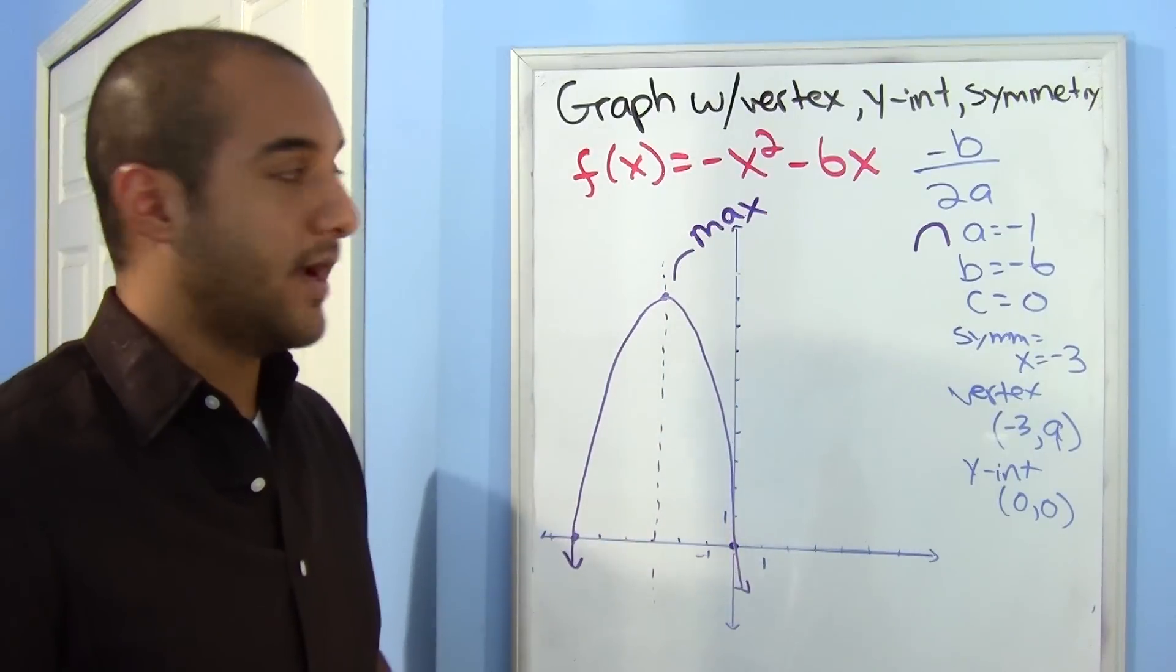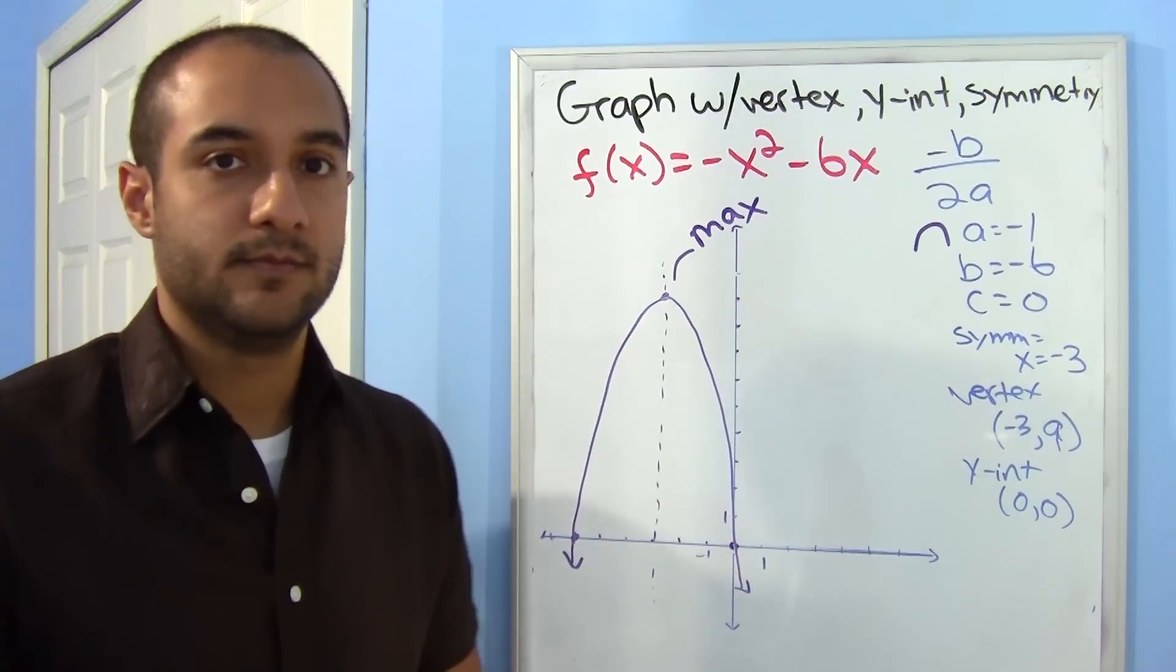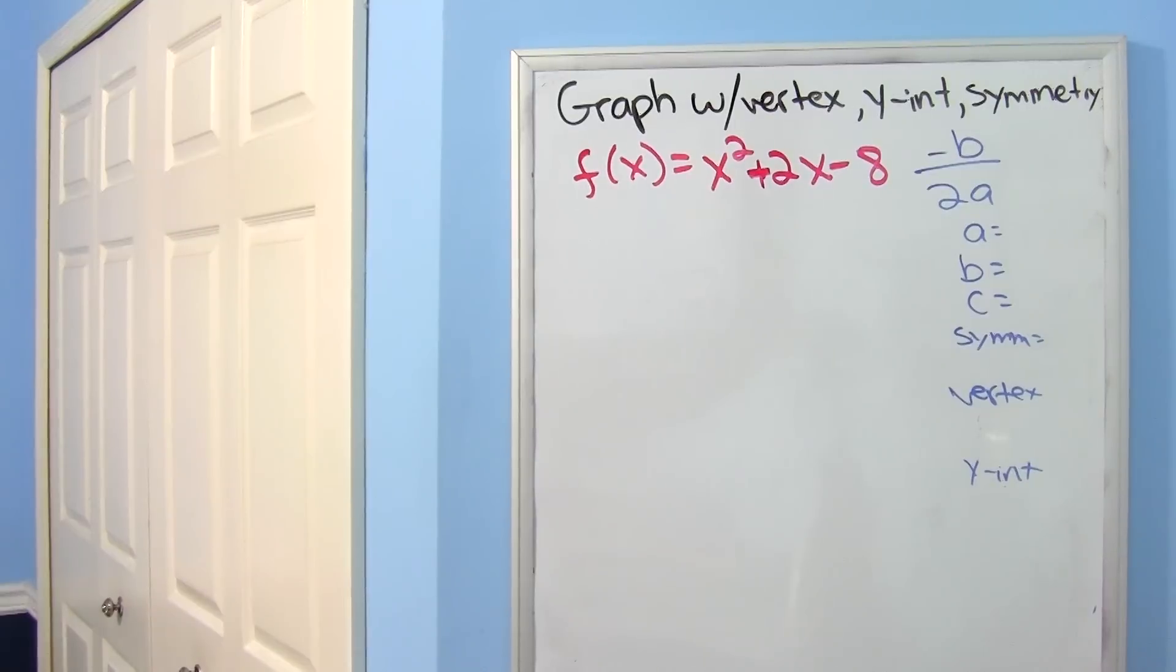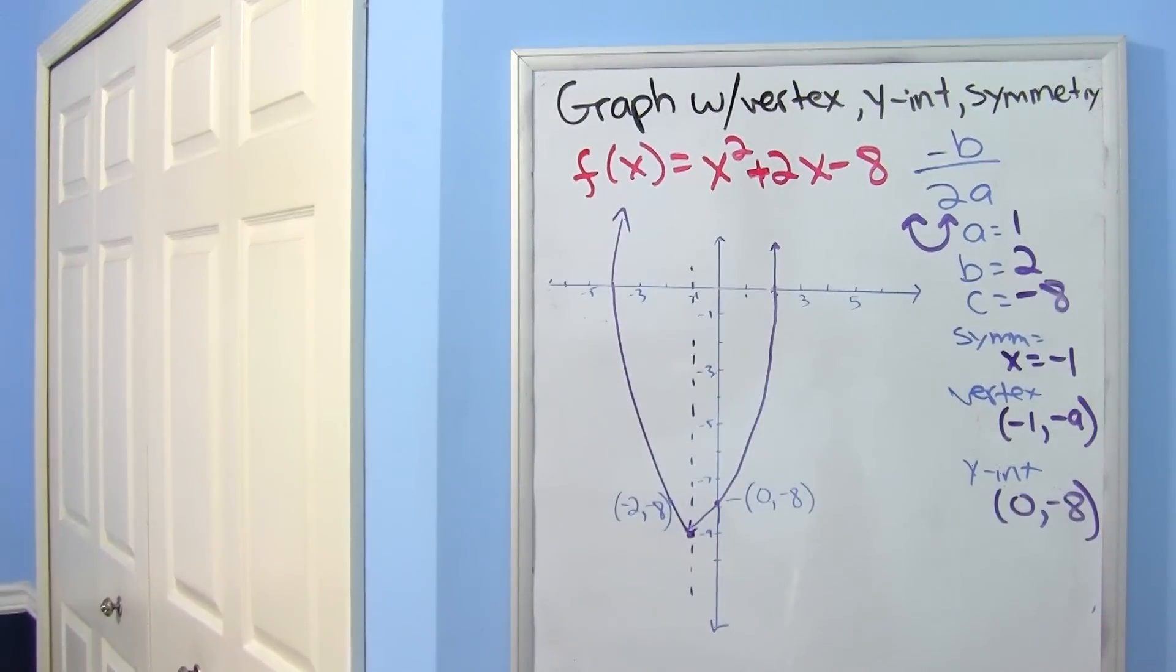And there you have it. We graphed it using just the information that we know. Alright, now it's your turn. Go ahead and find the vertex, the line of symmetry, the y-intercept. And go ahead and graph it. I'll show you the answers in 3, 2, 1. Alright, I know my graph came out horrible. But I tried it like 5 times. But these are the right answers. And I hope you got them right.